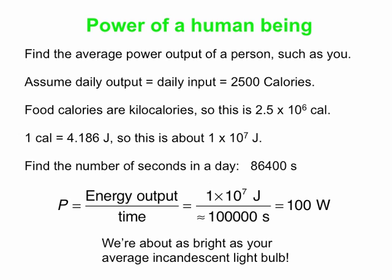Of course, we've done some averaging here. This is your average power over the entire day, including times when you're asleep. Most of us have a power output quite a bit less when we're asleep than when we're awake. And there are other times during the day — going for a run, a bike ride, rock climbing, or something strenuous — where your power output is quite a bit more than this. But averaged over the day, you're around 100 watts typically.